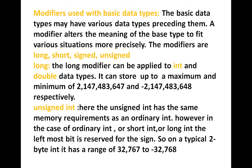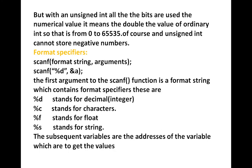But with an unsigned int, all the bits are used for the numerical value — meaning double the value of an ordinary int. So the range is from 0 to 65535. That means all 2 to the power of 16 values can be used, which equals 65536. So that is the difference when you declare a variable as unsigned int versus a normal int.